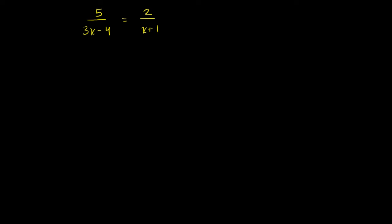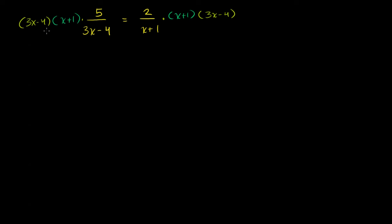If we multiply both sides of the equation by x plus 1, it's going to get rid of this x plus 1 in the denominator. And of course, we have to do it to both sides — we can't just do it to one side. But we also want to get rid of this expression right here, so let's multiply both sides of the equation by 3x minus 4 as well. This 3x minus 4 is going to cancel out with this 3x minus 4.